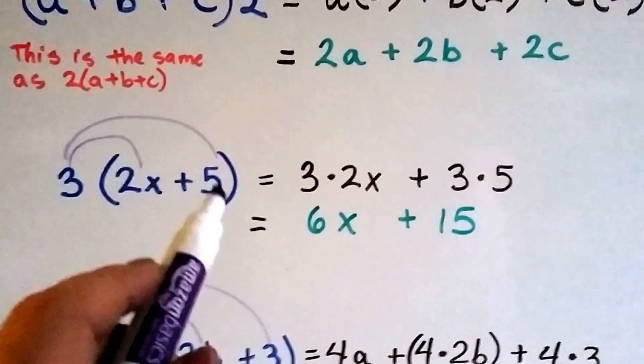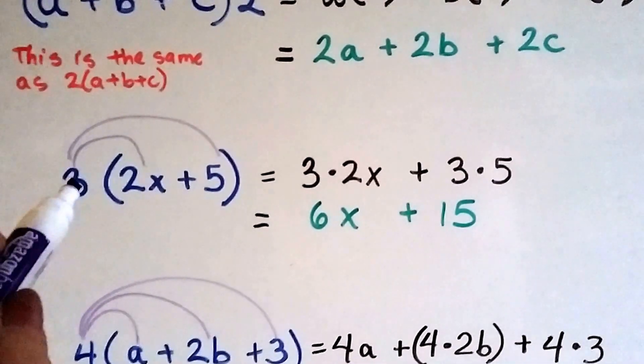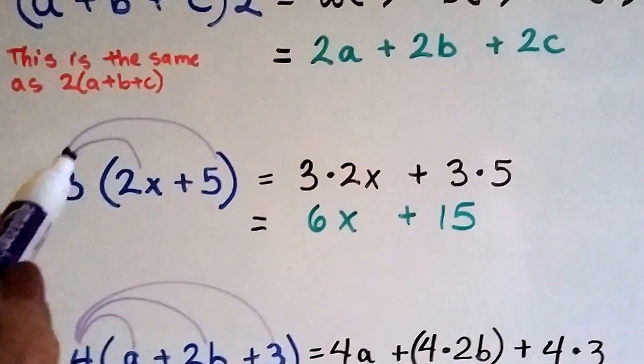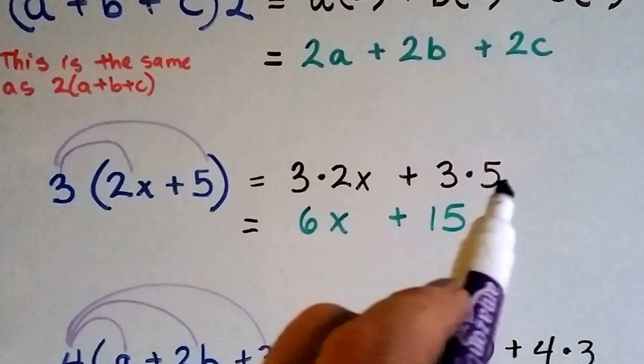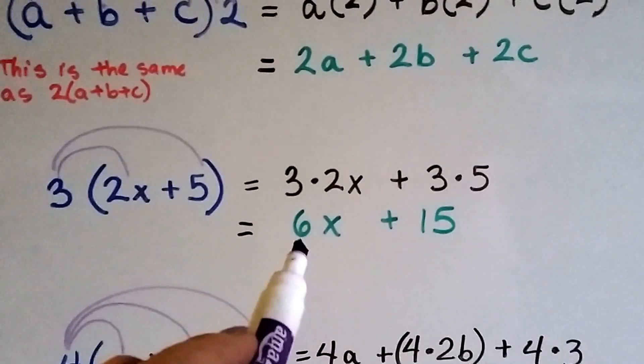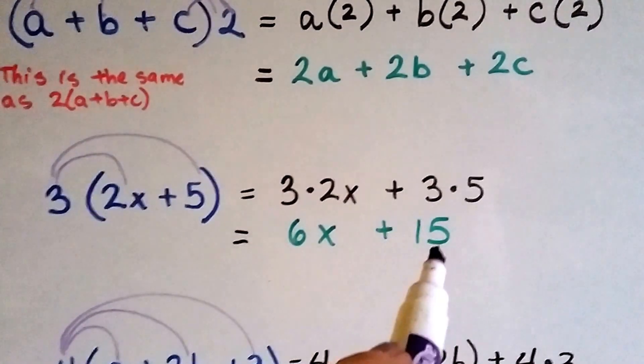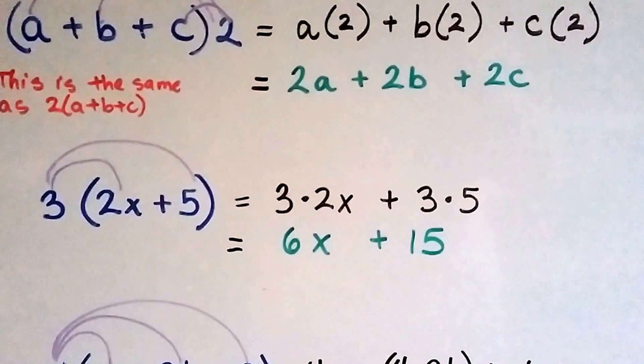And if we have numbers and variables inside the parentheses, we do the same thing. We distribute 3 times 2x plus 3 times 5 and we get 3 times 2x is 6x plus 3 times 5 is 15. And that's our equivalent expression.